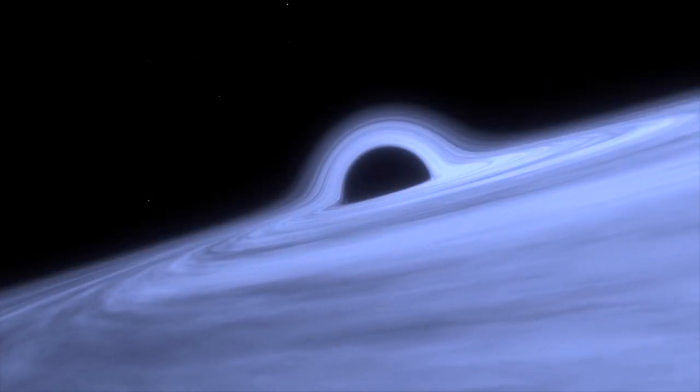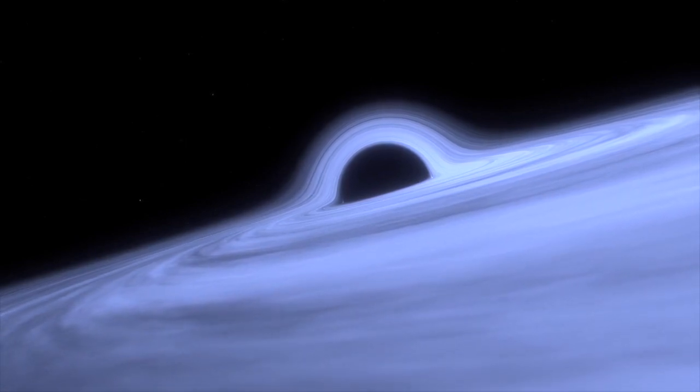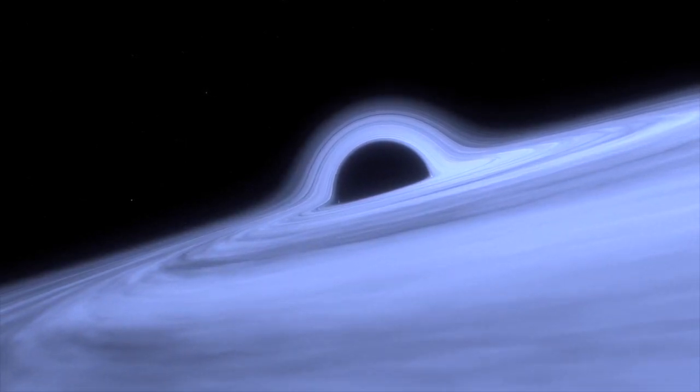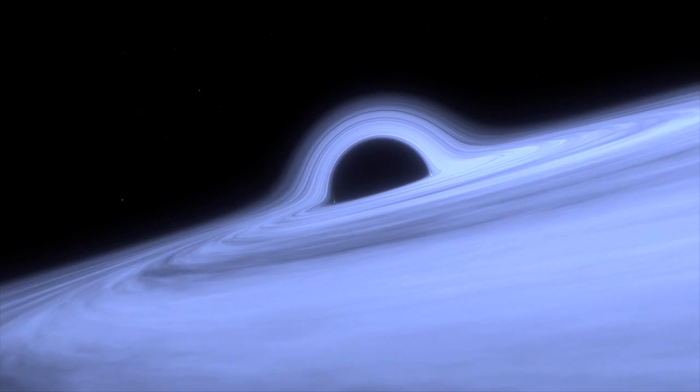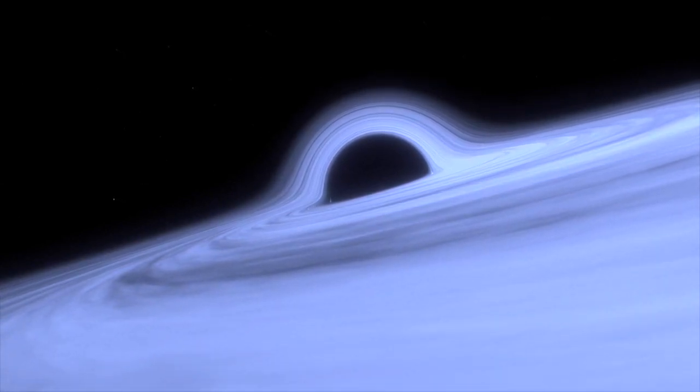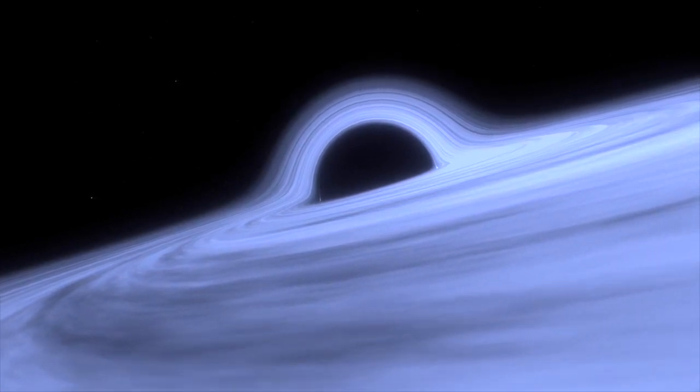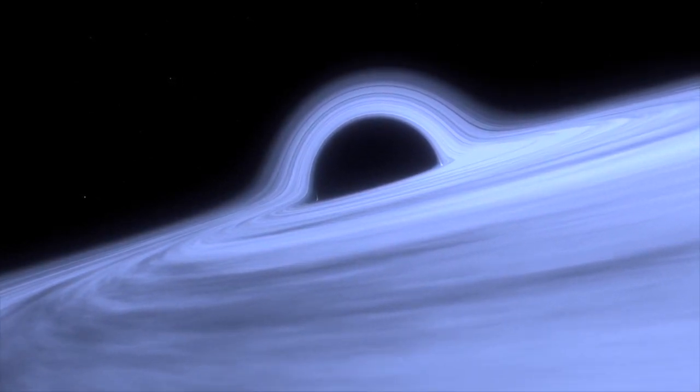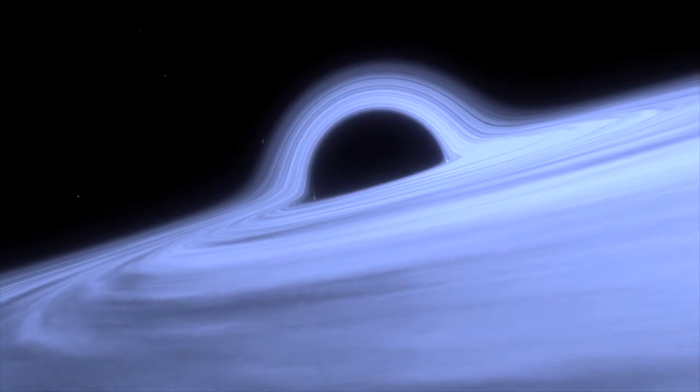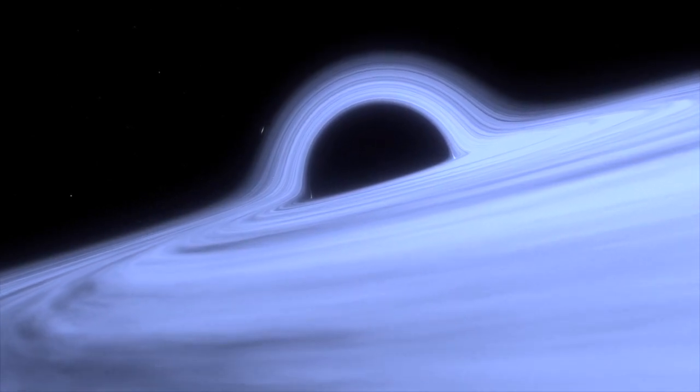The collision between the black hole and the neutron star was picked up in August, and scientists observing gravitational waves may have reached a huge milestone. On August 14th, 2019, giant detectors in the US and Italy picked up on gravitational waves, and these were set off when a black hole and a neutron star collided around 900 million light years away.